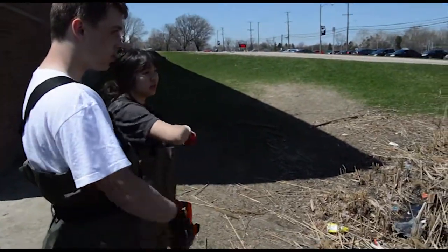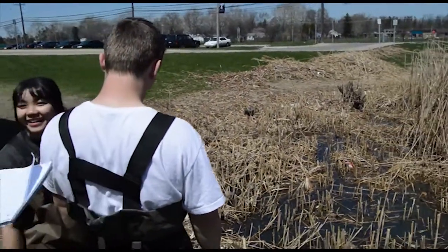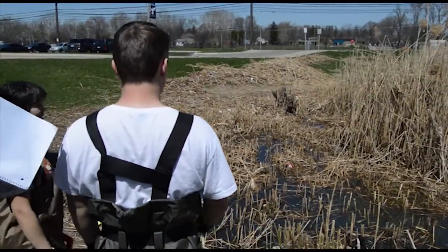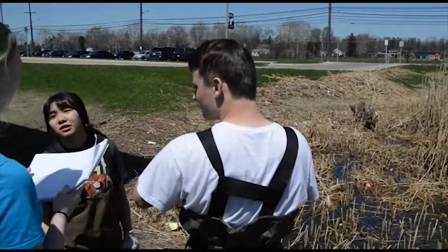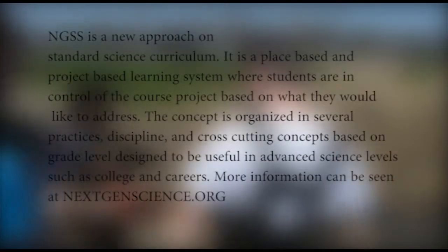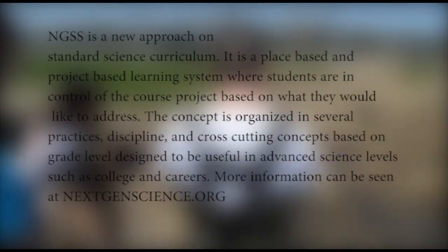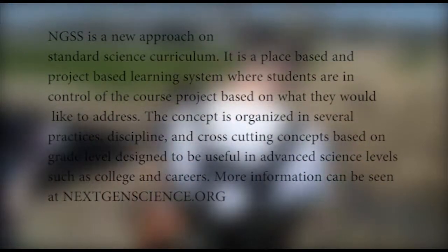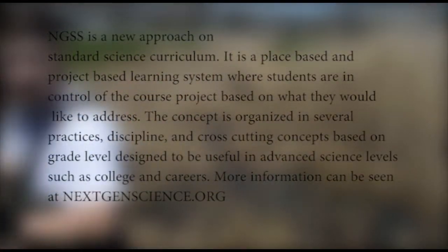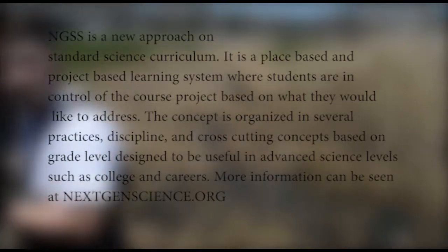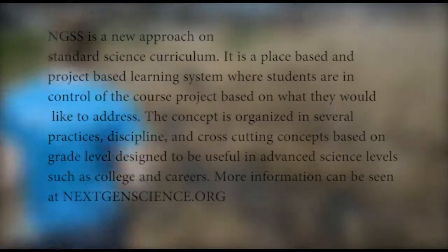The AP Environmental Science class is the first ever class at Thurston to develop the new style of learning that is starting to be adopted by many science classes around the country. This science concept is called the Next Generation Science Standards, or NGSS for short. NGSS is a new approach to standard science curriculum — a place-based and project-based learning system where students are in control of the course project based on what they would like to address. The concept is organized in several practices, disciplines, and cross-cutting concepts based on grade level, designed to be useful in advanced science levels such as college and careers.